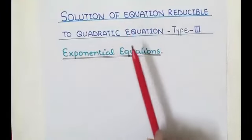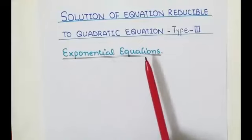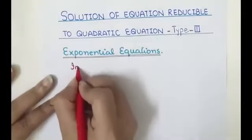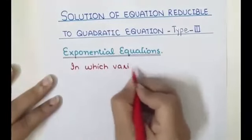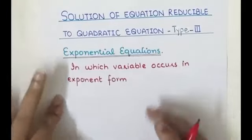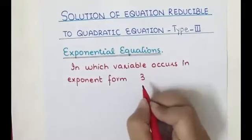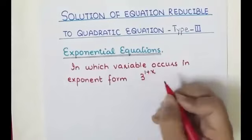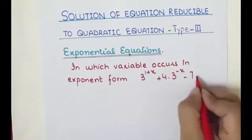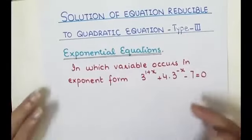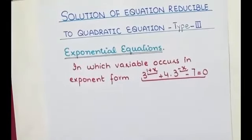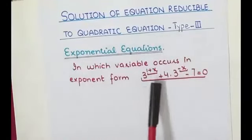We are looking at the solution of equations reducible to quadratic equations, specifically related to exponential equations. Exponential equations are those in which variables occur in the exponent. For example, 3^(1+x) + 4·3^(-x) - 7 = 0. Let's take an example and understand how we can reduce such equations to a quadratic equation and find their solution.